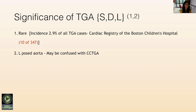In CCTGA, there is atrioventricular discordance as well as ventriculoarterial discordance — discordance at both atrioventricular and ventricular arterial levels. However, in TGA, there is only discordance at the ventricular arterial level.